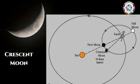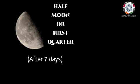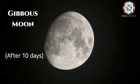After three days of the New Moon, we can see a small part of the Moon — it looks like a sickle. This stage is called the Crescent Moon. After seven days of the New Moon, we can see half of the Moon. This is known as Half Moon or the First Quarter. After ten days of the New Moon, we can see more than half of the Moon. This stage is called the Gibbous Moon.